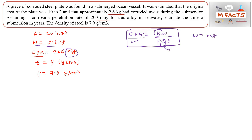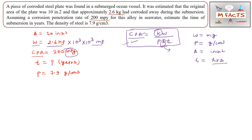Since CPR is in mils per year, W must be in milligrams. The given weight loss is 2.6 kg, so we convert: 2.6 kg × 10³ (to grams) × 10³ (to milligrams) = 2.6 × 10⁶ mg. Density ρ is already given in g/cm³. Area is given as 10 inches squared, which is correct for mils per year. Time t will come out in hours.